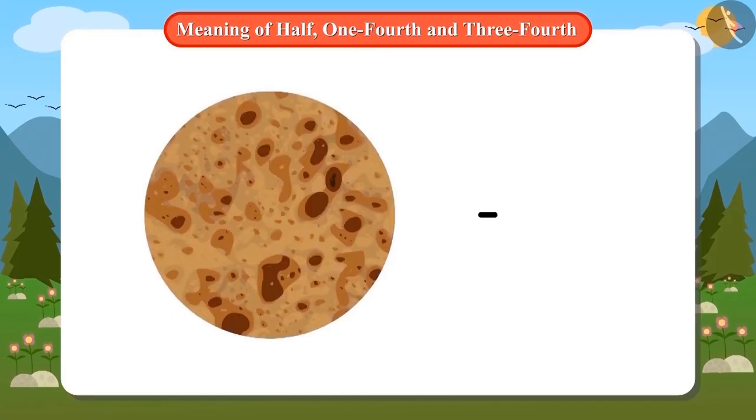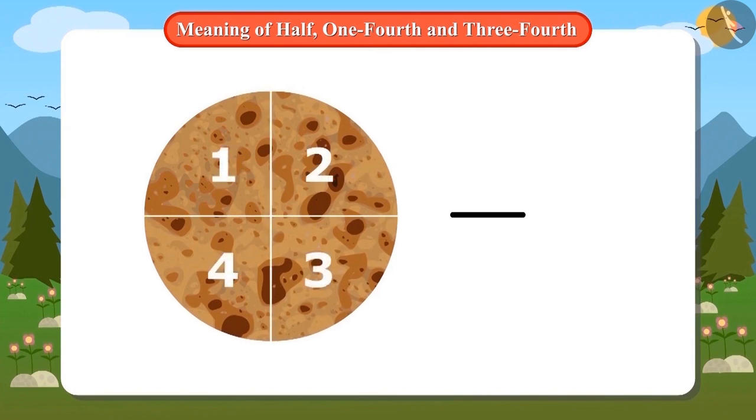This is also very easy. First, draw the line of division. Write down the total number of parts below the line, that is, four. Now write down the number of parts that Neha ate of the paratha above the line, that is, three. So we can say that Neha has eaten three-fourths of the paratha.